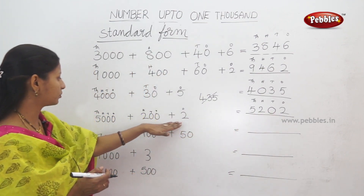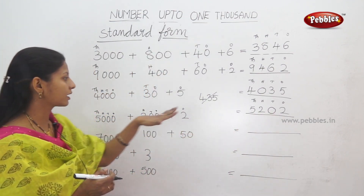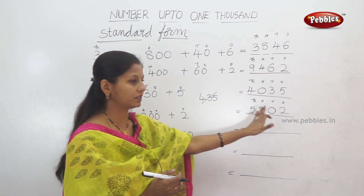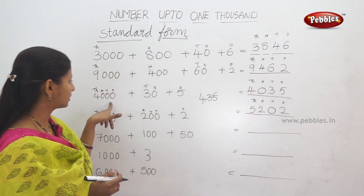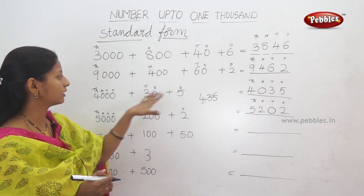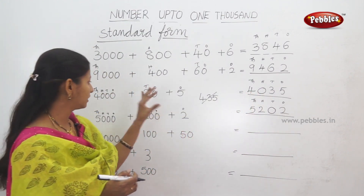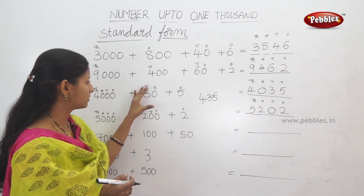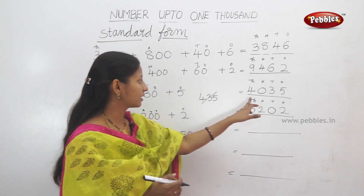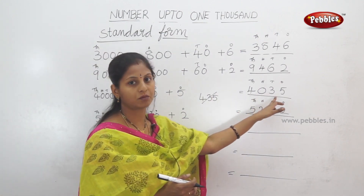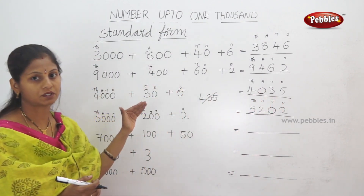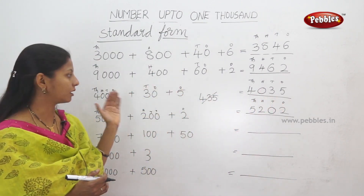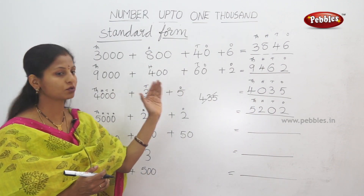So, in the expanded form we have 3 numbers — we have 4 digits. So, here we have 1, 2, 3 numbers — 3 place values. We have a 4-digit number. So, a number we have missed — we have 0.